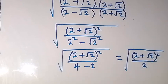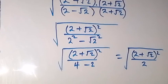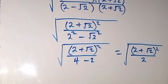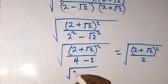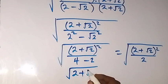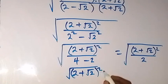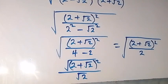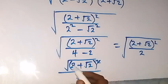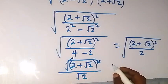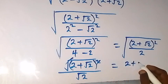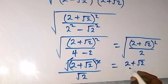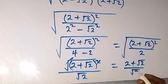From here we can separate this into two roots. This becomes square root of (2 plus root 2) squared, divided by root 2. When we have division we separate it into two roots, and the square cancels the square root, leaving (2 plus root 2) over root 2.